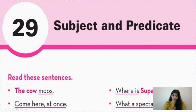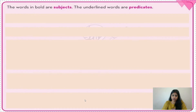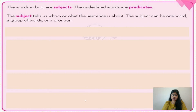In 'Where is Superna?' — whom are we talking about? Superna. So 'Superna' will become the subject and the rest of the sentence will become the predicate. In 'What a spectacular shot!' — what are we talking about? 'Shot.' So 'shot' will become subject and 'what is spectacular' will become predicate. The words in bold are subjects and the underlined words are predicates. The subject tells us whom or what the sentence is about.